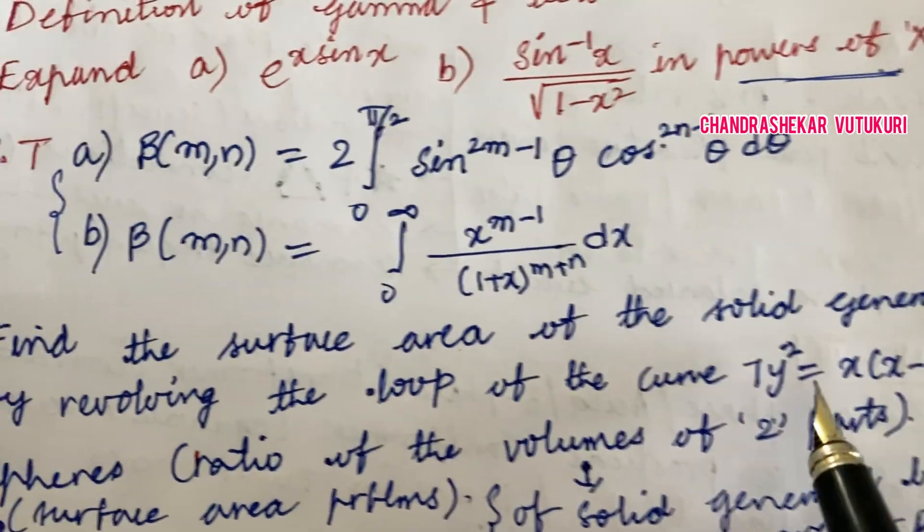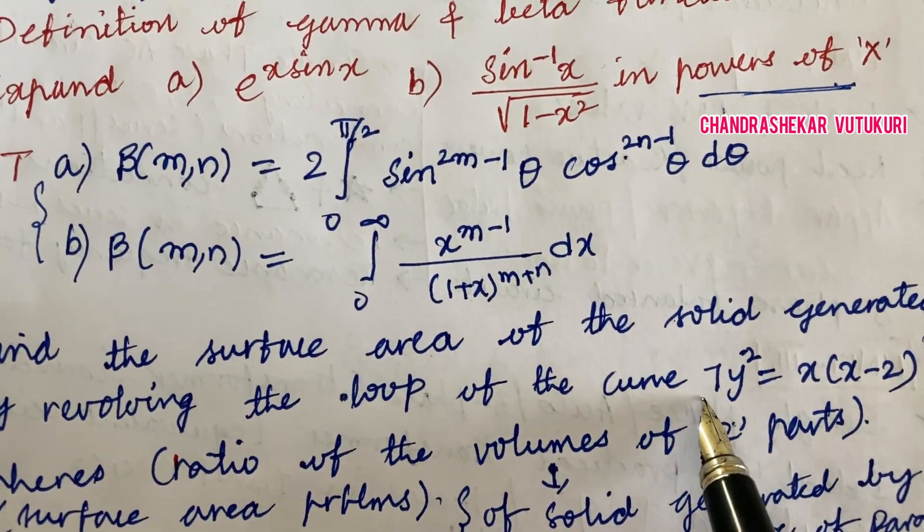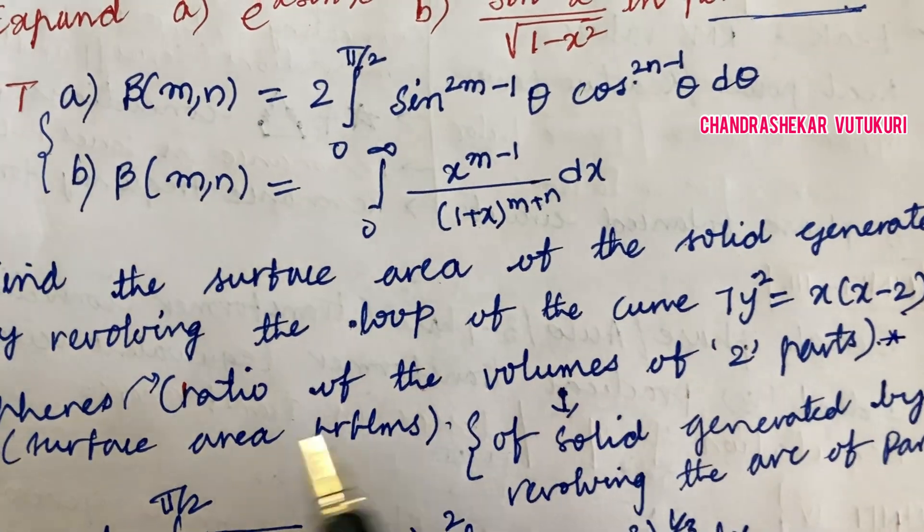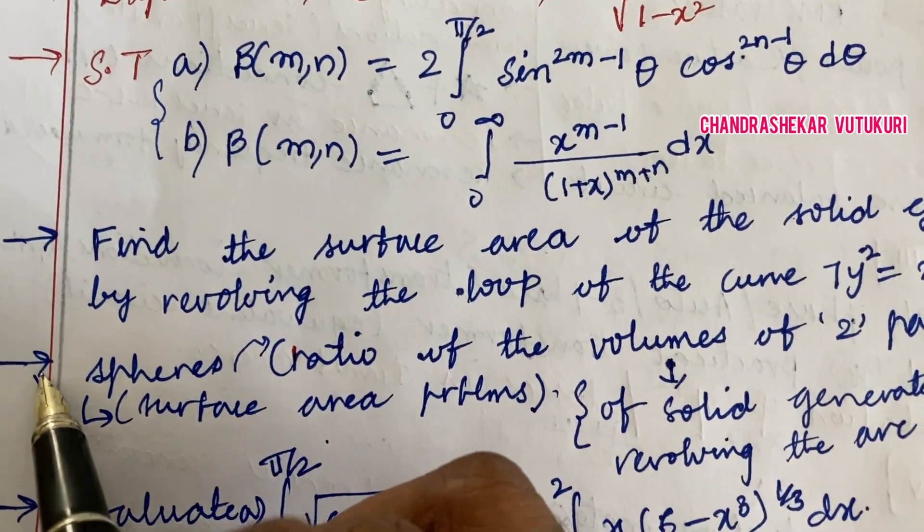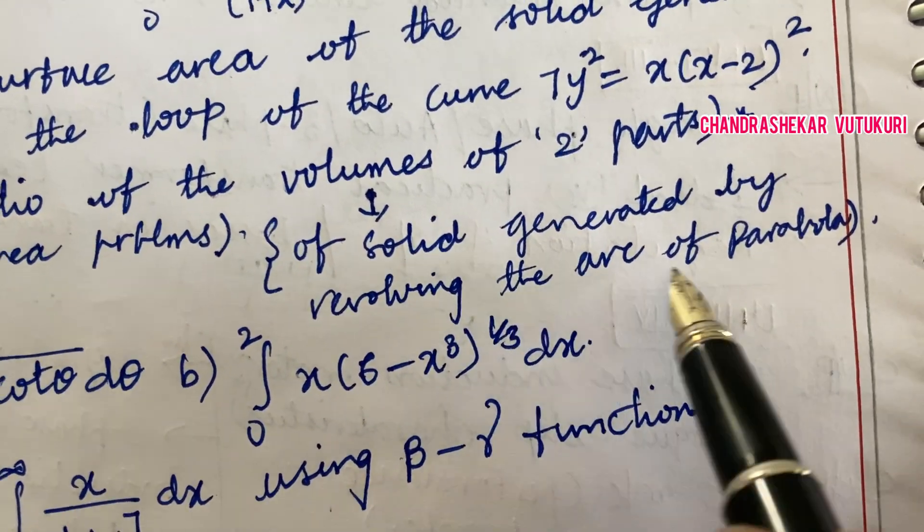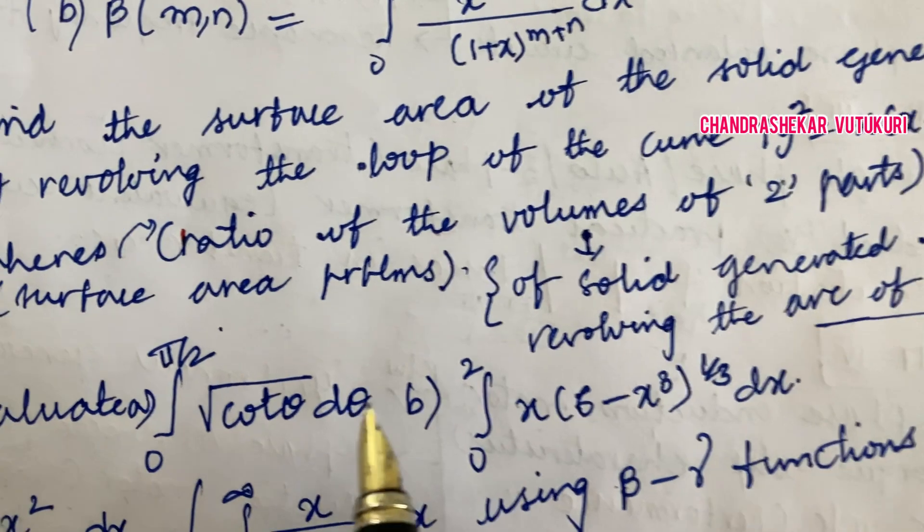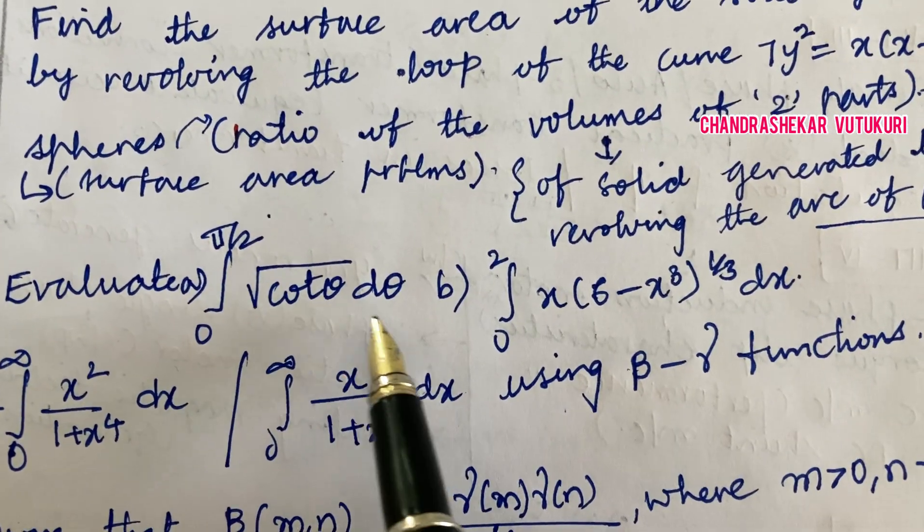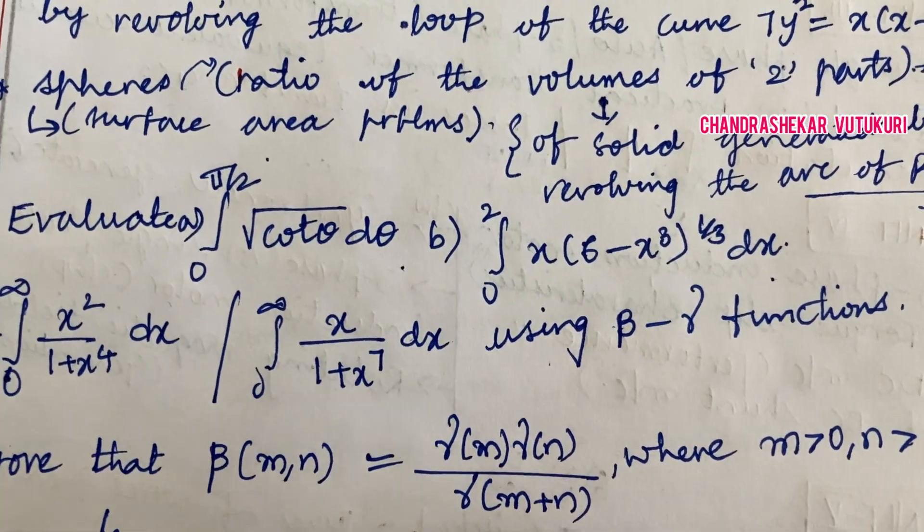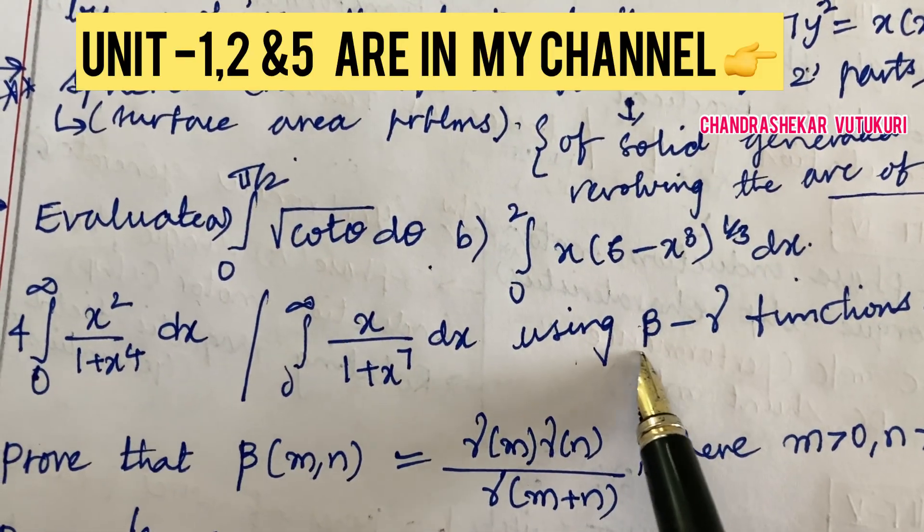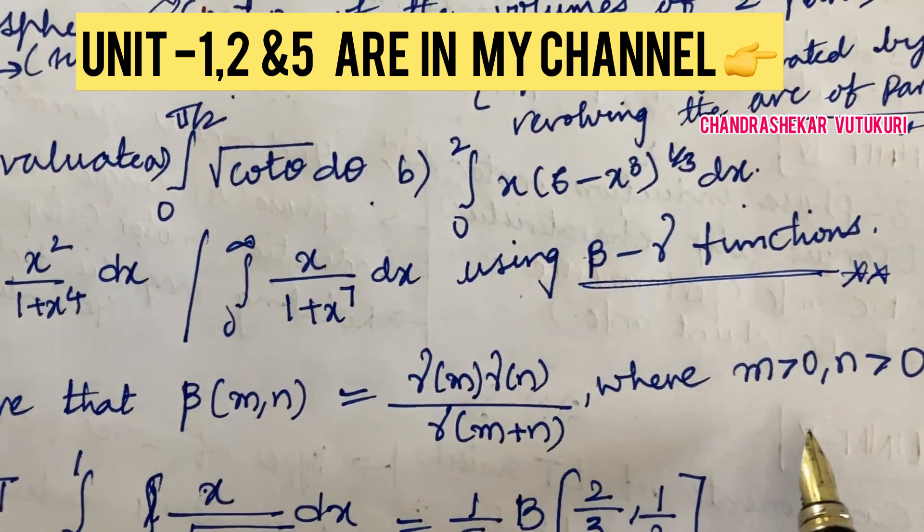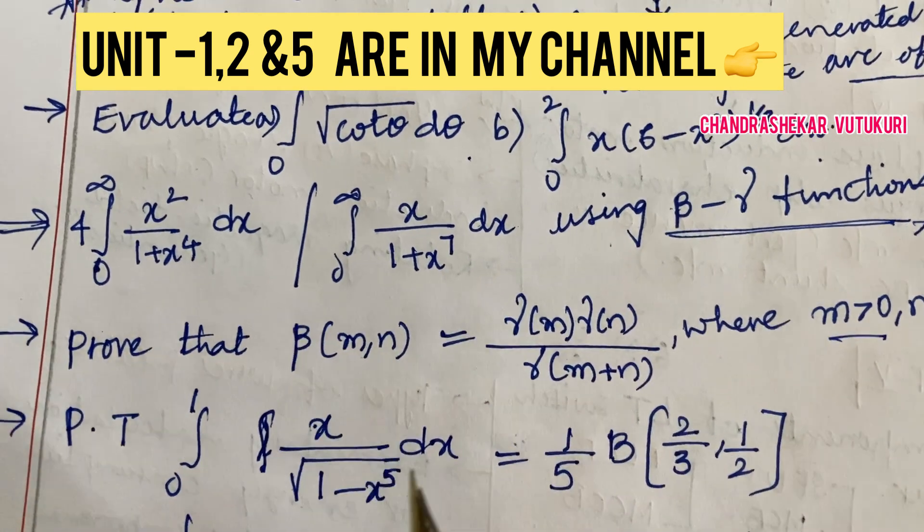Find the surface area of the solid generated by revolving the loop of a curve. Problems related to ratio of volumes of two parts as well as surface area problems related to the sphere may be the topmost question in 4A or 4B. Volume of solid generated by revolving the arc of parabola will be asked, and evaluate integration of this term with respect to dt and dx. You are supposed to work out using beta-gamma functions, which may occur in 4C.